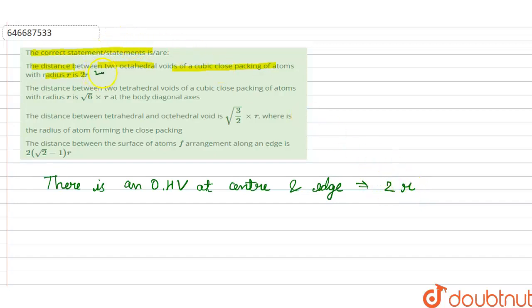So our first fact is correct. So the next is the distance between the two tetrahedral voids of cubic close packing of atoms with radius r is root 6r at the body diagonal. And as we know that there are total two tetrahedral voids on one body diagonal and the distance comes out to be root 6r, so correct.